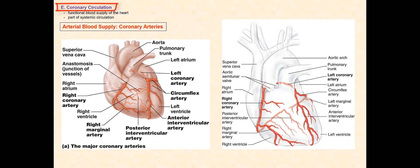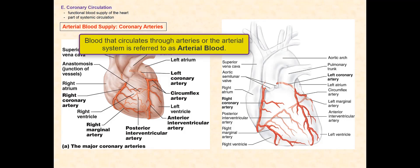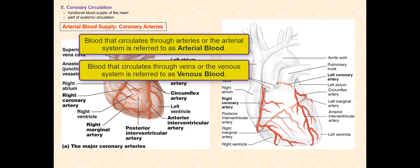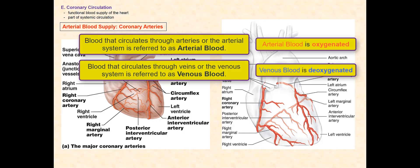We will now discuss the coronary circulation, which is the functional blood supply of the heart. The coronary circulation is part of the systemic circulation. Blood that circulates through arteries, or the arterial system, is referred to as arterial blood. Blood that circulates through veins, or the venous system, is referred to as venous blood. The arterial blood is oxygenated, and the venous blood is deoxygenated.